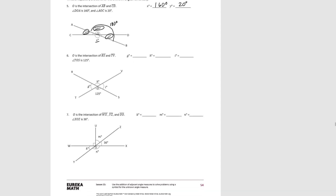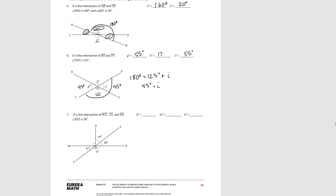Try number six. O is at the intersection of RS and TV, and we know angle TOS is 125 degrees. The full straight angle equals 180 degrees, so 180 equals 125 degrees plus unknown angle I. Therefore angle I equals 55 degrees. Since opposite angles are equal, G also equals 55 degrees. And since this angle is 125 degrees, angle H also has to be 125 degrees.